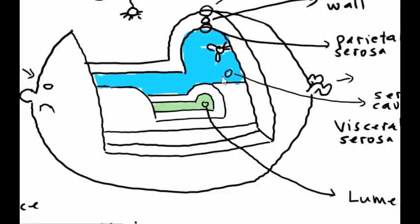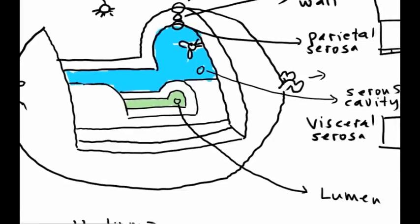Other examples of open cavities in the body besides the lumen of the digestive tract would be in the urinary tract, the respiratory tract, and the reproductive tract. So there are a lot of these open cavities in the body. And the membrane that lines these cavities is always called a mucous membrane, or mucosa.